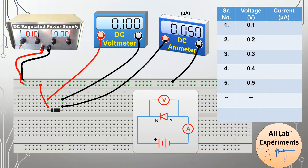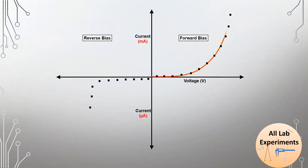After that, when we plot the forward and reverse bias characteristics of this diode, it will look like this. Here is the forward bias characteristic and here is the reverse bias characteristic. This graph explains the complete diode VI characteristics.